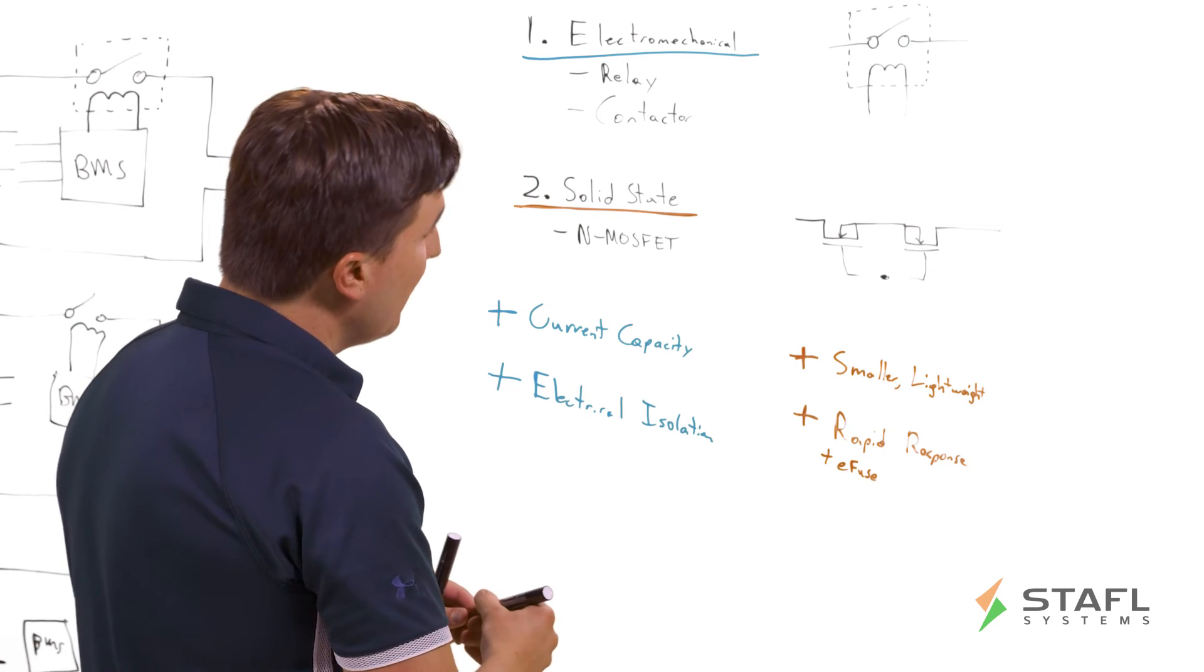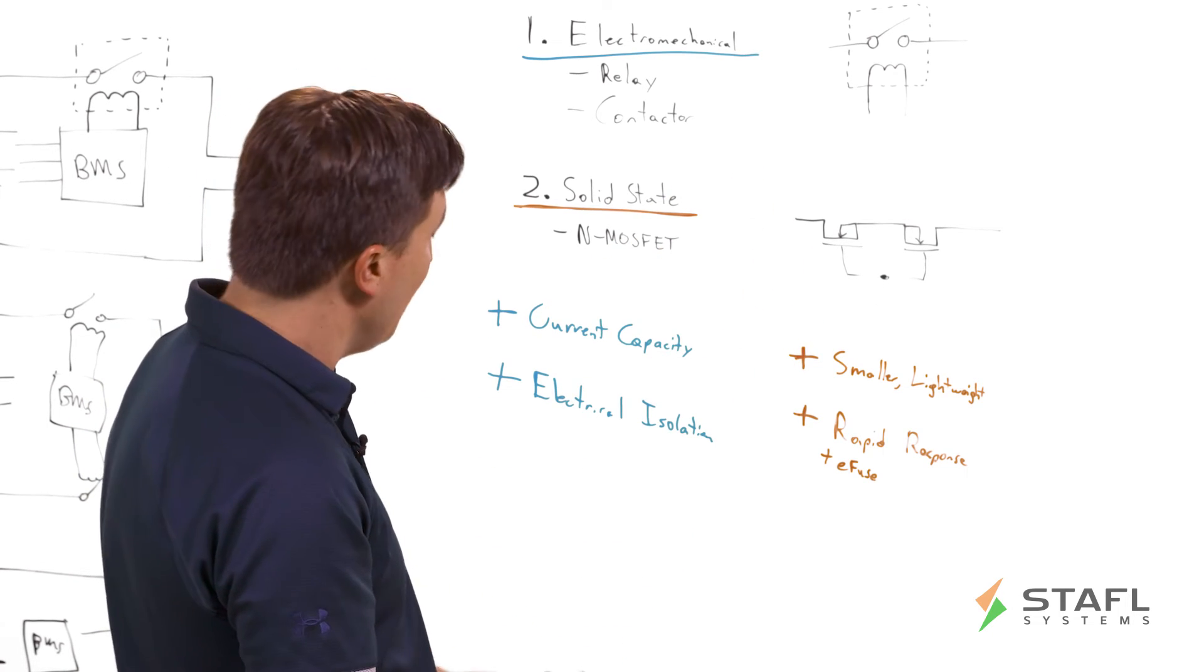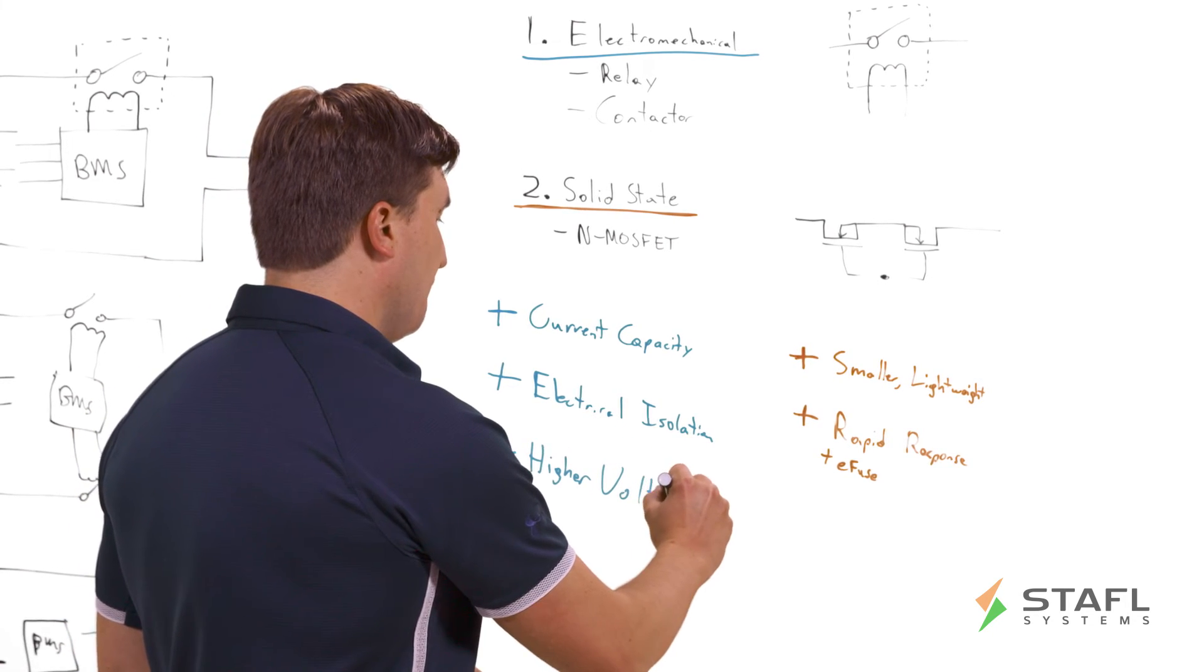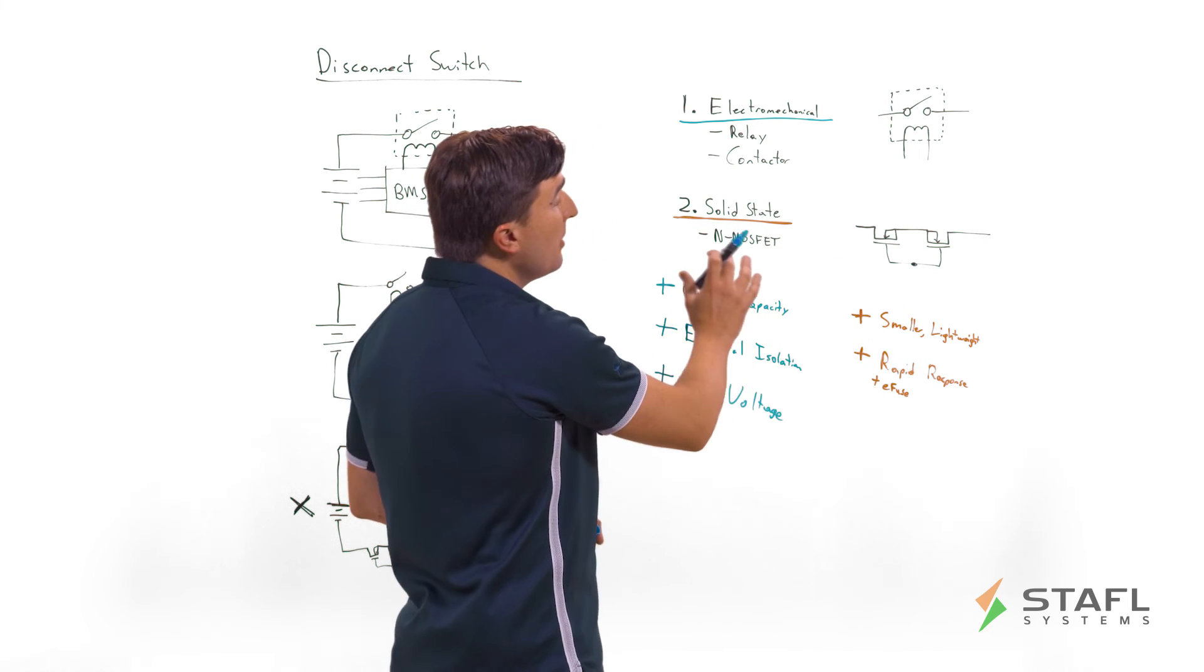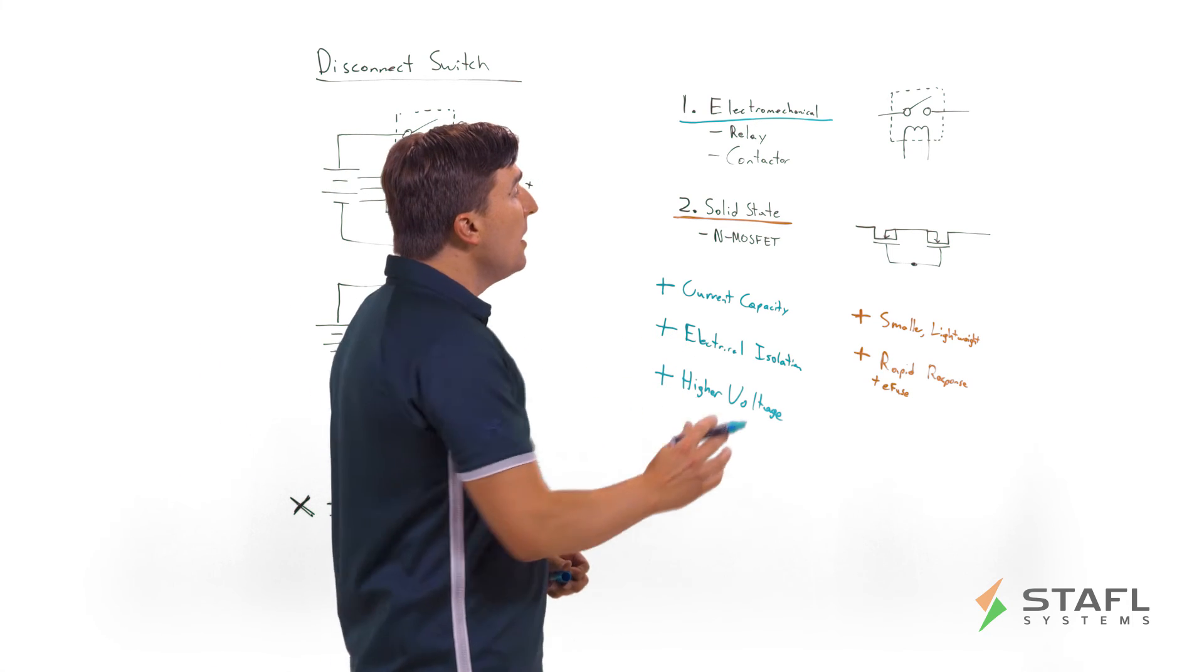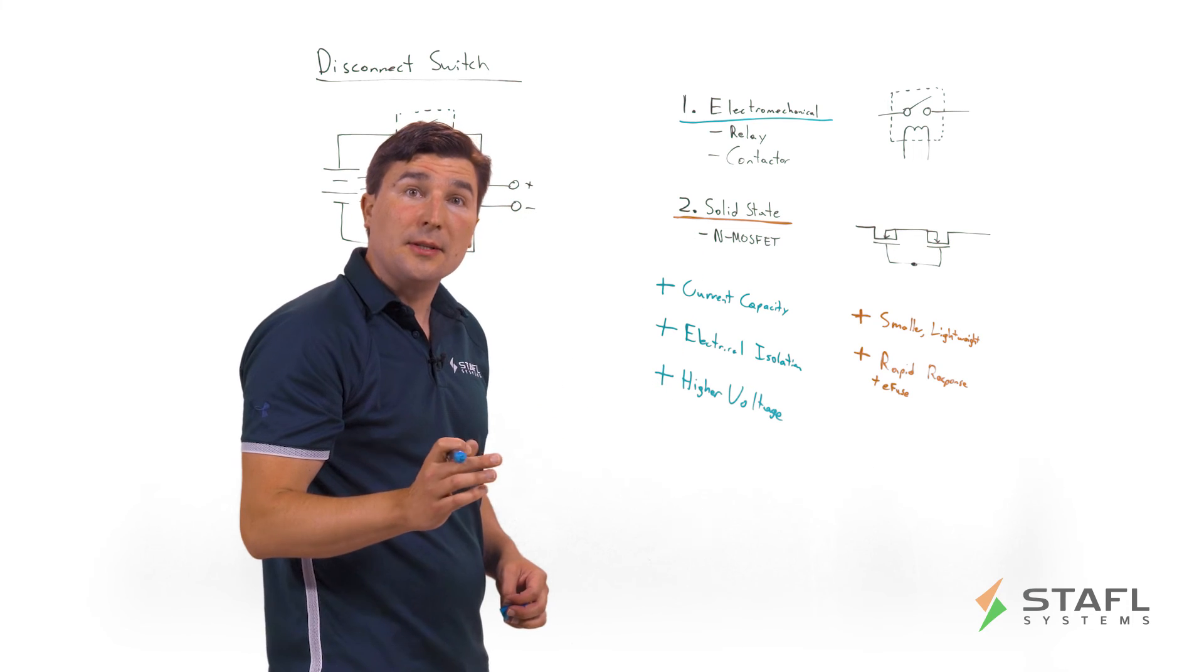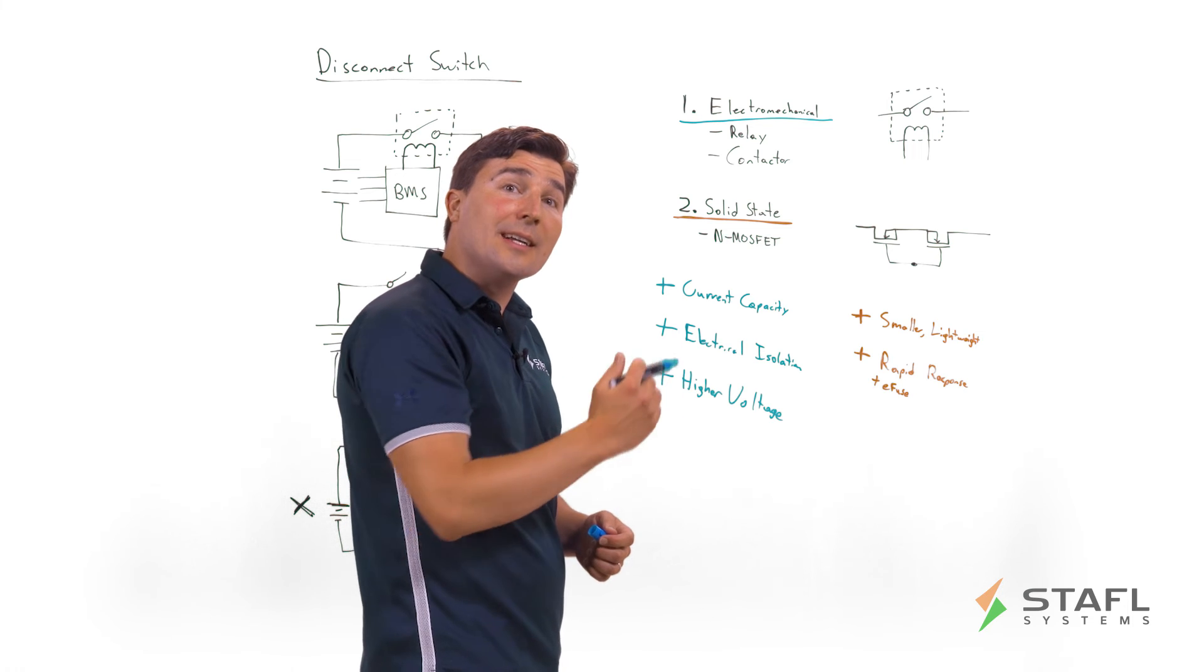However, one thing to consider is the electromechanical actually allows higher voltage. For example, solid state switches are appropriate for 24 volt systems, perhaps 48 volt battery pack systems, maybe even up to 96 volt systems, but certainly are very uncommon or very challenging to do in a 400 volt system or an 800 volt system. That is much more appropriate for a contactor because it is able to have lower contact resistance at these higher blocking voltages.